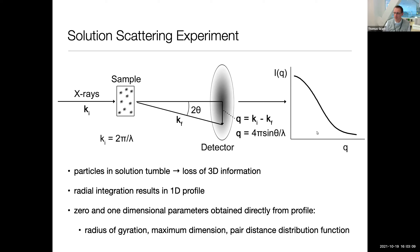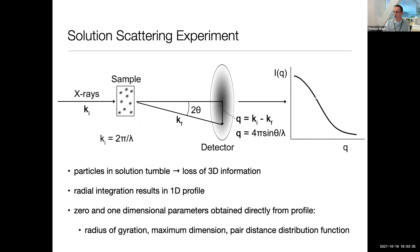You can perform an azimuthal average to get a one-dimensional function of intensity as a function of Q. From this one-dimensional function, you've lost an enormous amount of three-dimensional information. This is a low-resolution, low-information technique. However, we can get some useful information — things like the radius of gyration, the maximum particle dimension, and some size and shape information from what we call the pair distribution function, which is itself just a 1D Fourier transform of the intensity profile.